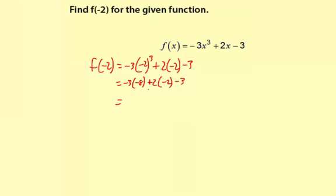Now we'll simplify the multiplication step. Negative 3 times negative 8 is positive 24. 2 times negative 2 is negative 4, and then just minus 3. Okay, now we'll do the addition and subtraction. 24 minus 4 is 20, and then 20 minus 3 is 17.